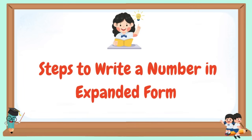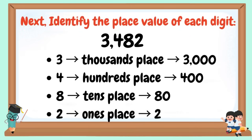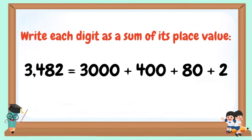Steps to write a number in expanded form: First, write the number clearly — 3,482. Next, identify the place value of each digit: 3 is in the thousands place (3,000); 4 is in the hundreds place (400); 8 is in the tens place (80); and 2 is in the ones place (2). Write each digit as a sum of its place value: 3,482 in expanded form is 3,000 + 400 + 80 + 2.